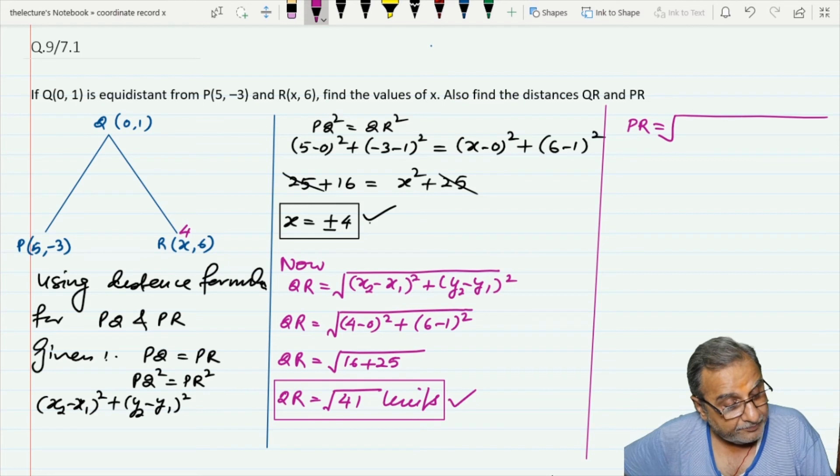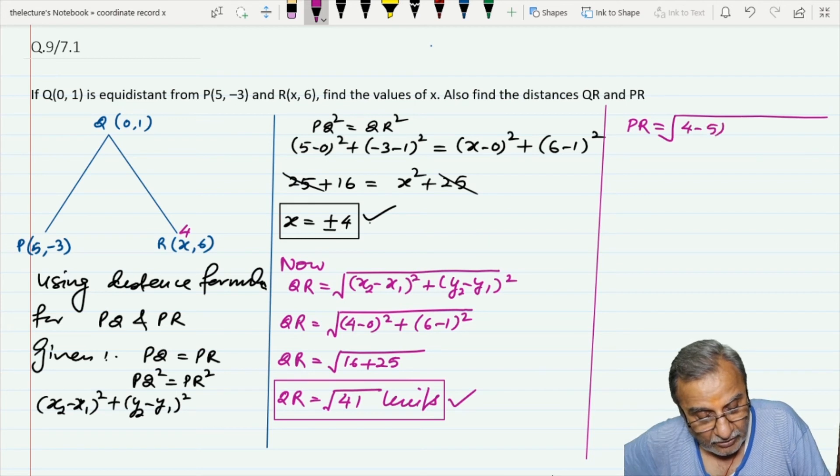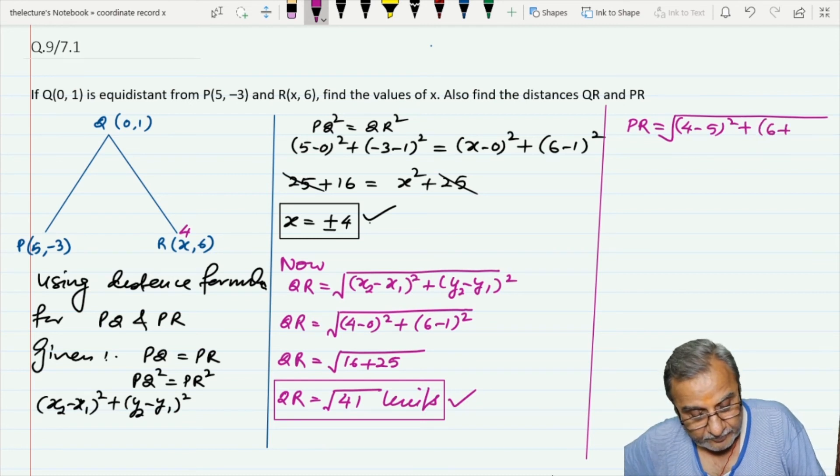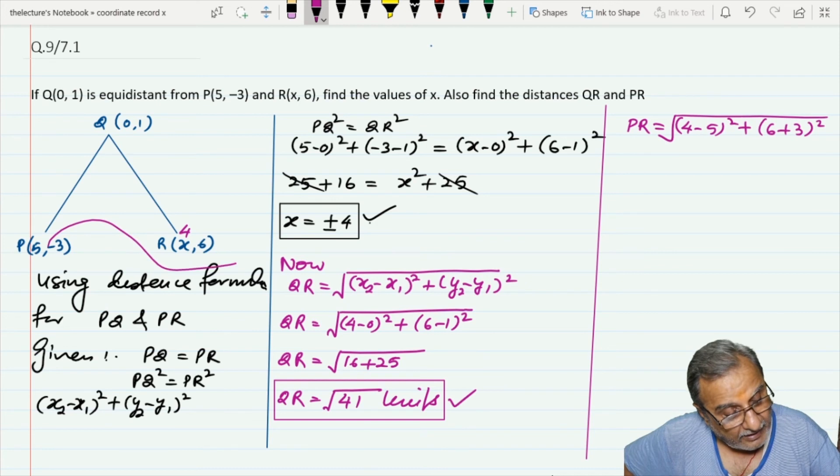With x = 4, that is (4-5)² + (6-(-3))². Since minus times minus in the formula gives plus, this becomes (4-5)² + (6+3)².